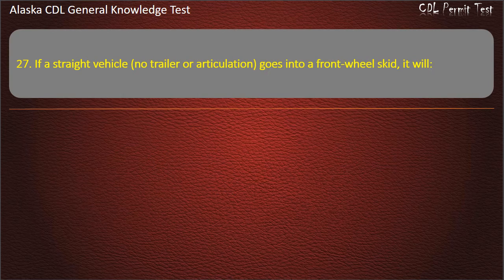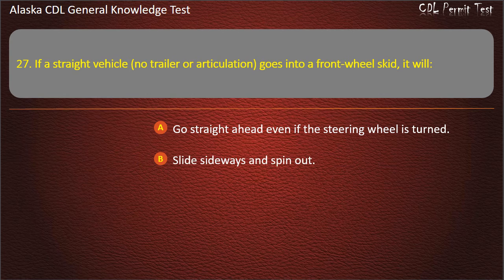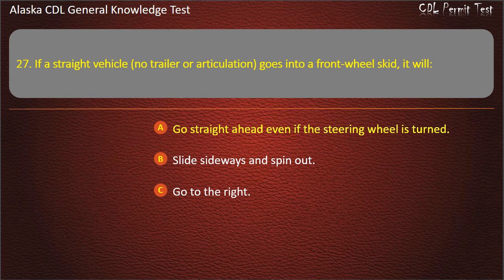Question 27. If a straight vehicle with no trailer or articulation goes into a front wheel skid, it will go straight ahead even if the steering wheel is turned, slide sideways and spin out, or go to the right. Answer: Go straight ahead even if the steering wheel is turned.